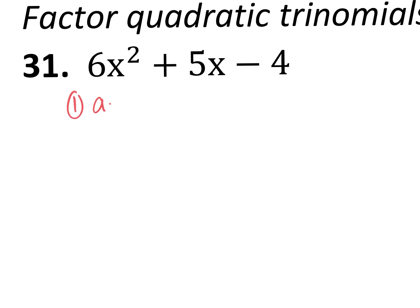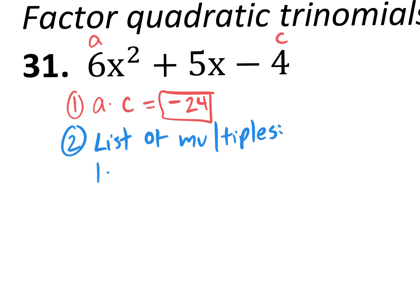Step 1 is to multiply A times C. And we're going to get 6 times negative 4. A is 6, C is negative 4. You're going to get negative 24 as an answer. And then step 2 is to make a list of multiples. So let's make a list. I always say start with the number 1. So 1 times what will give you negative 24? 1 times negative 24. 2 times negative 12 will give you negative 24. 3 times negative 8 gives you negative 24.